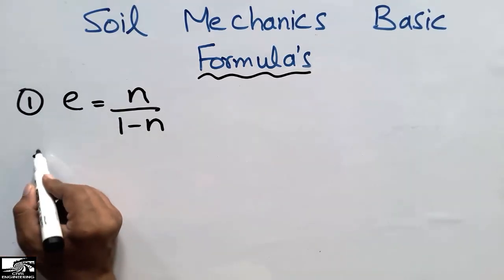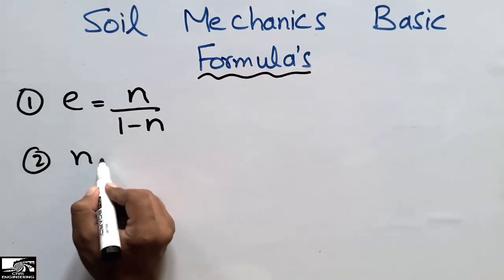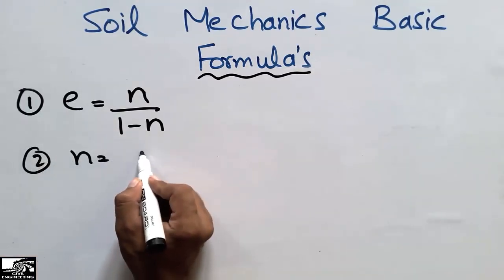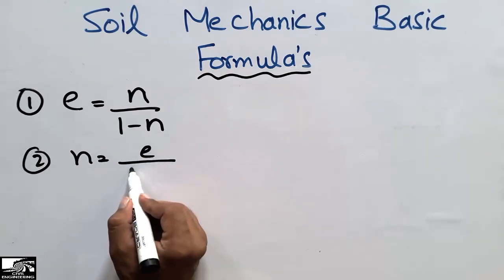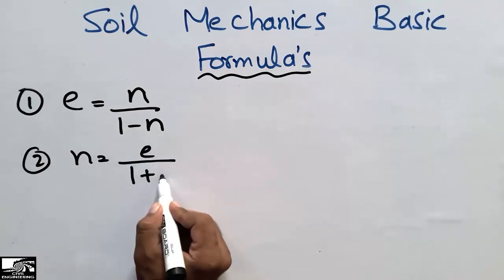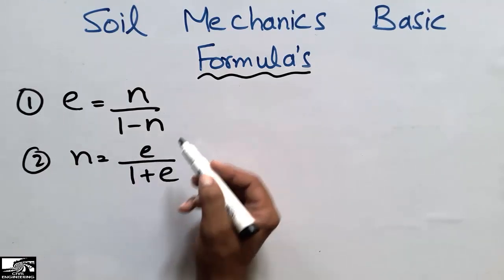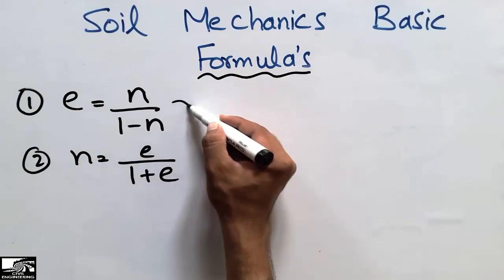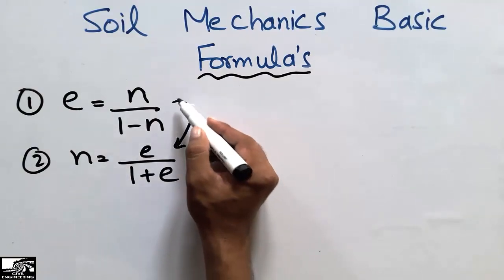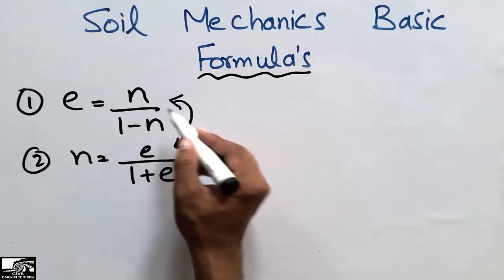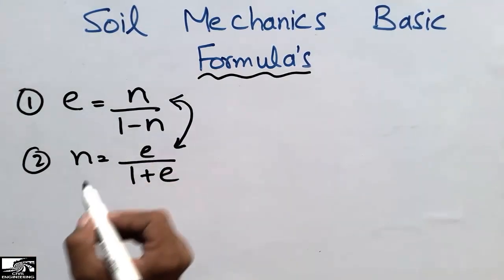The second formula is: if we are given the void ratio, we can find the porosity. This formula can also be derived from the first formula — these two formulas are interchangeable.